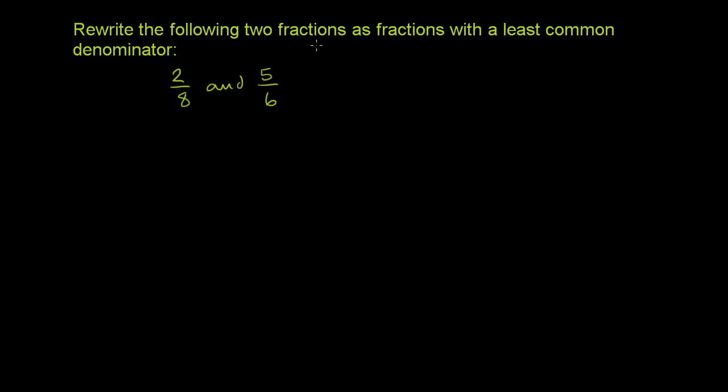We're asked to rewrite the following two fractions as fractions with a least common denominator. So a least common denominator for two fractions is really just going to be the least common multiple of both of these denominators over here.